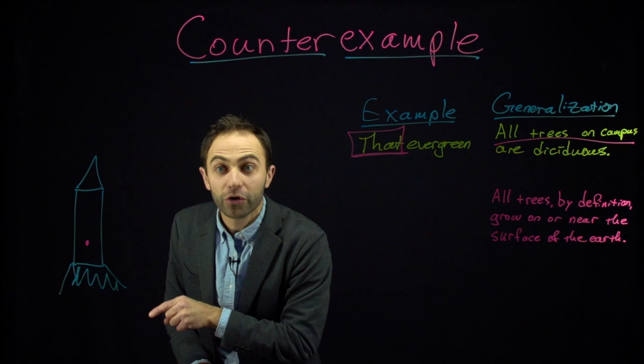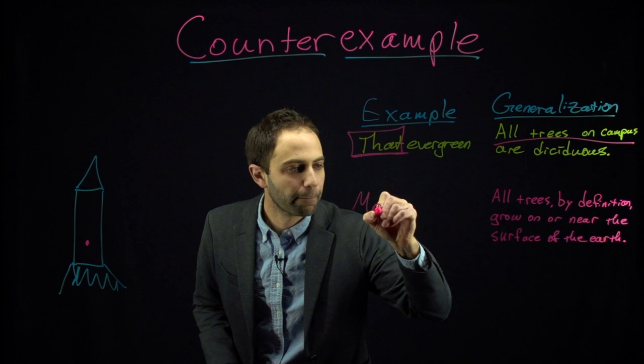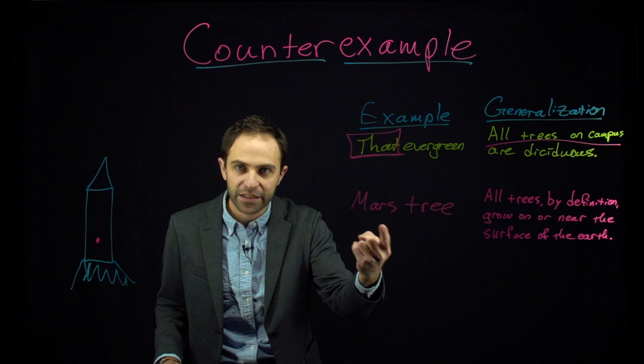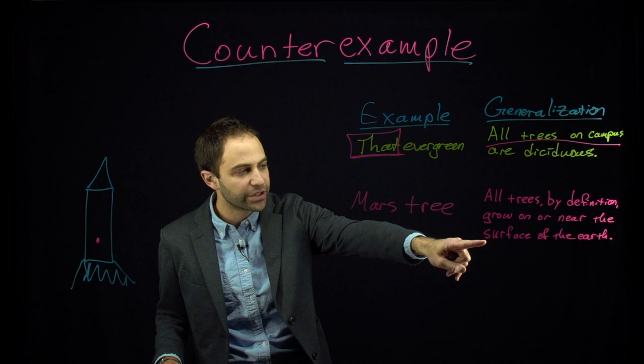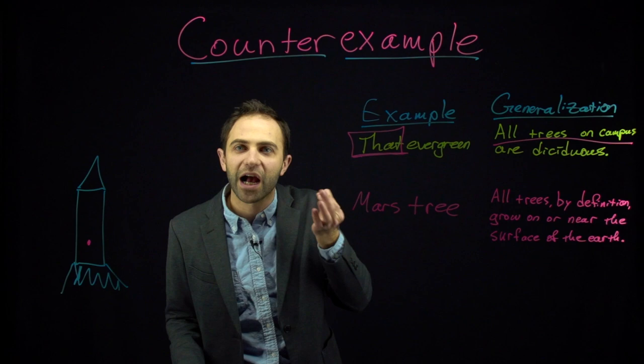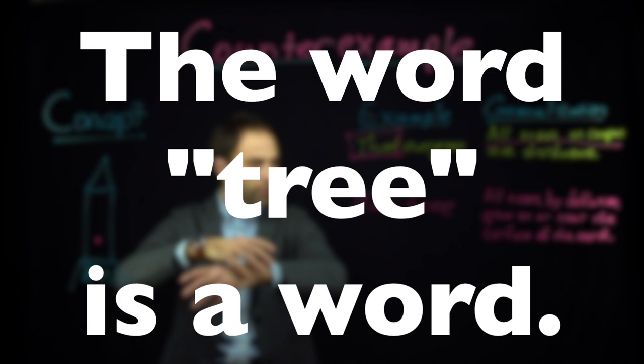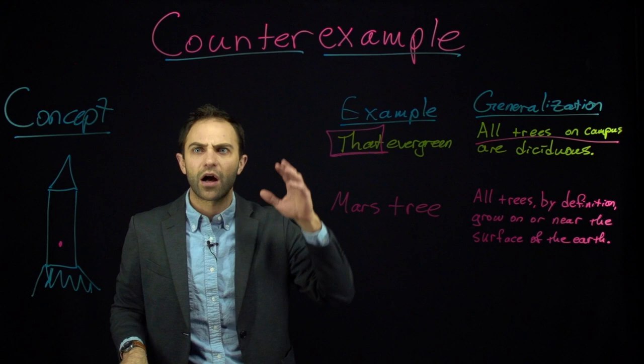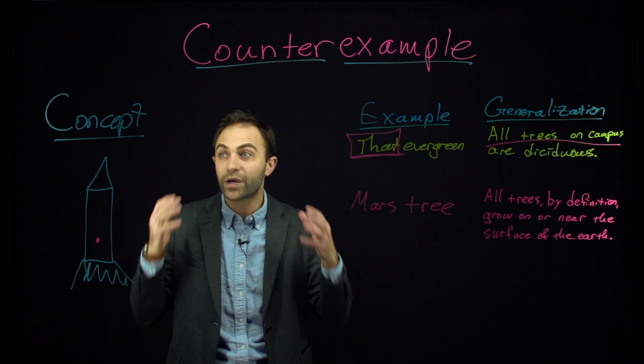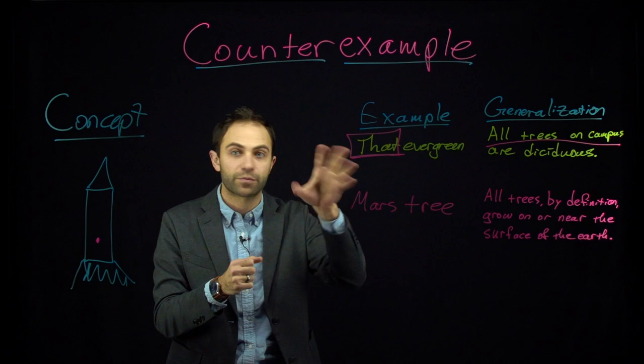Why did that work? Why was that successful? Why does this non-existent but imaginary Mars tree work to disprove this claim? The answer is that this claim is about our concept of a tree. A concept is a shared idea — it's best to think of it as the meaning of a word. The word 'tree' is a word English speakers all have, and everyone who can think about trees, whether in English or any other language, shares the same idea: a concept, the idea of a tree.